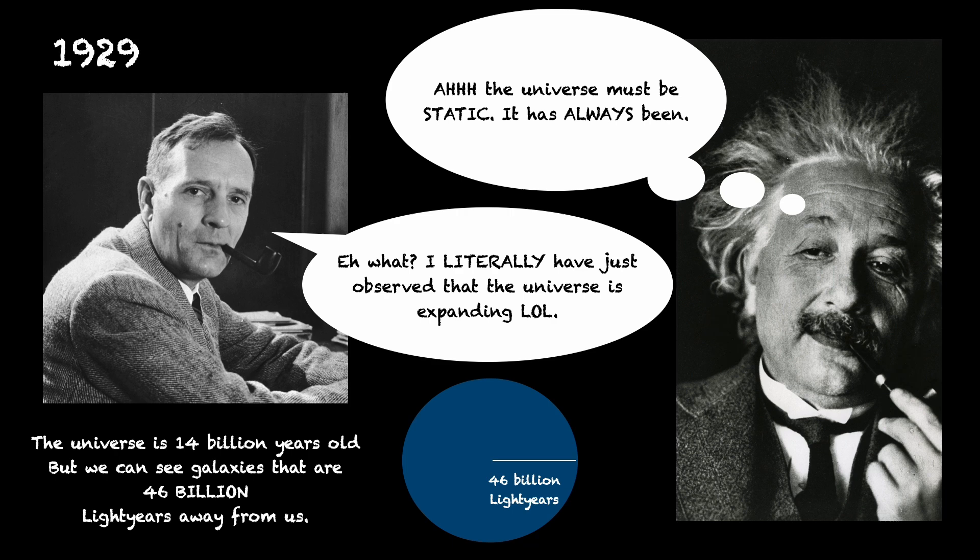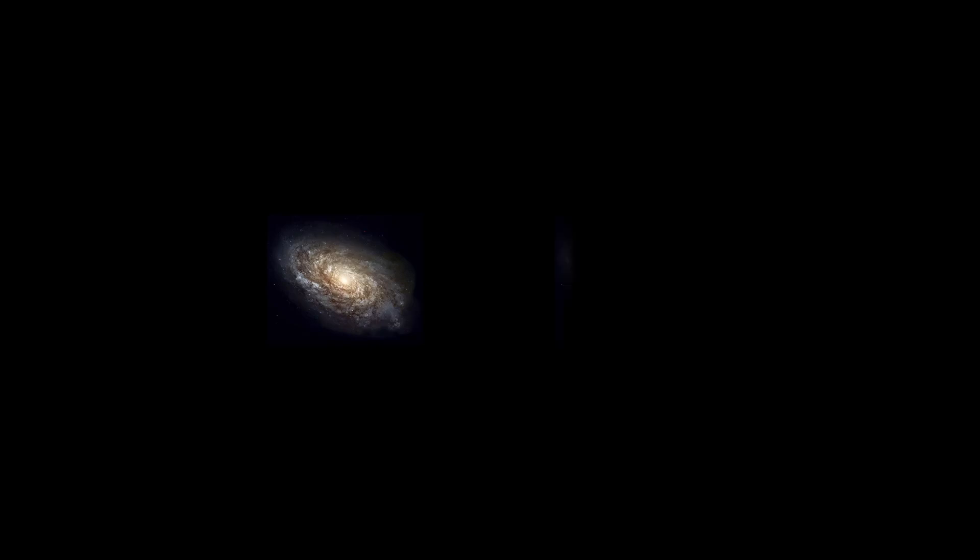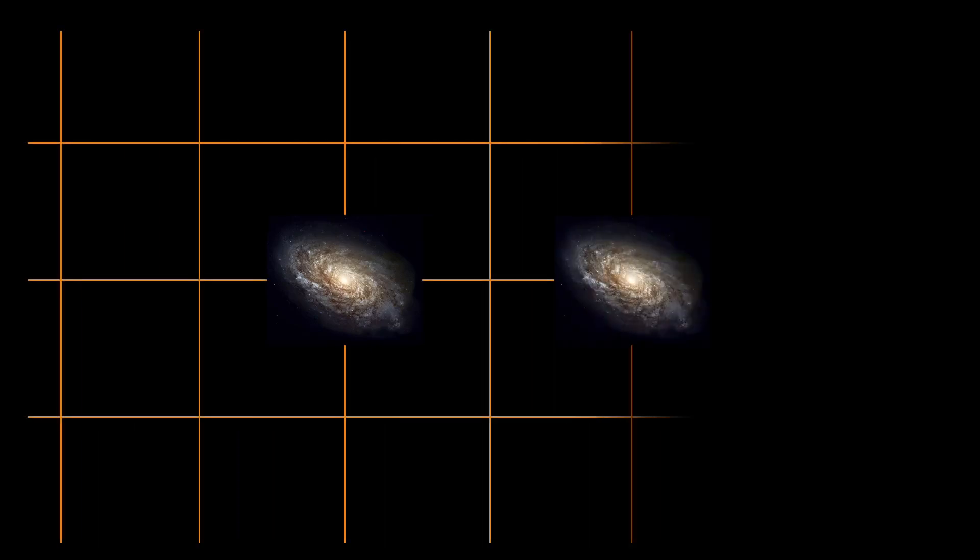So let's have a closer look at the expansion of space. We have two galaxies in space. And to represent space, we will draw a grid. Both galaxies are located in intersection points of grid lines. This way we can define a distance between them. And in our case, the distance between the two galaxies is two grid points.